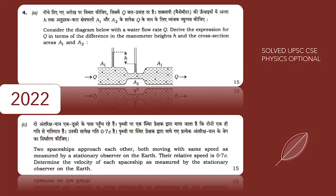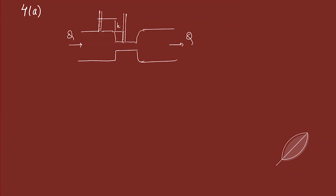Hello everyone. In today's video we are solving two questions. The first question involves a venturimeter where we are given the water flow rate Q, and we have to derive the expression for Q in terms of the manometer height H and the cross-sectional areas a1 and a2.